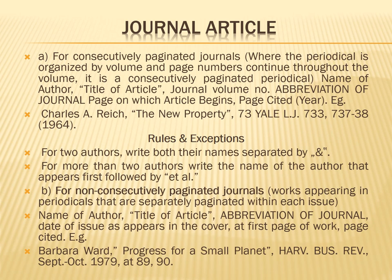Some rules and exceptions also apply. If there are two authors, separate them using 'and'. For more than two authors, write the name of the first author and then add 'et al.' For non-consecutively paginated journals, use the name of the author, then title of article in inverted commas, then abbreviation of the journal, date of issue as it appears on the cover or first page of the work, and page cited.